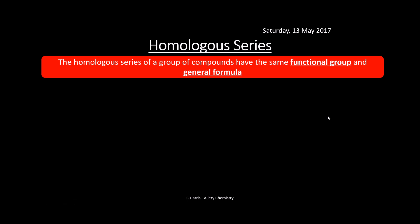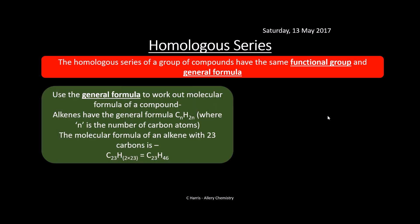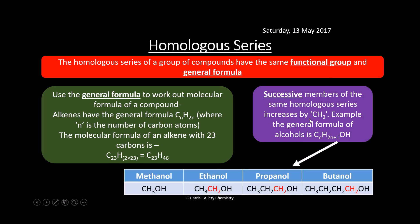Homologous series — a group of compounds that have the same functional group and general formula. We're going to use the general formula to work out the molecular formula of a compound. Alkenes have the general formula CnH2n, where n is the number of carbon atoms. So the molecular formula of an alkene with 23 carbons is C23H46. Successive members of the same homologous series increase by CH2. The general formula of alcohols is CnH2n+1OH — they all have an OH, but each member increases by CH2.